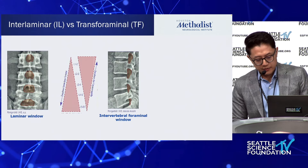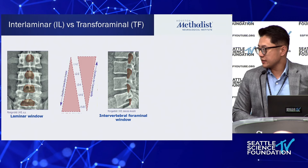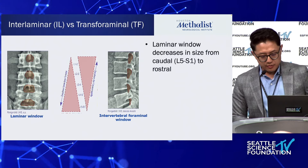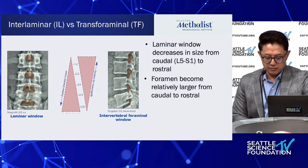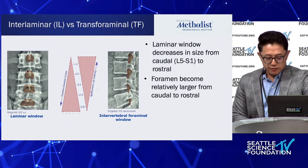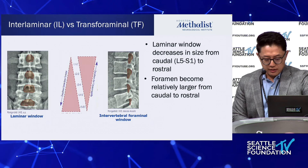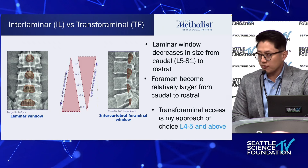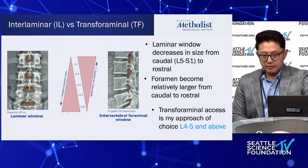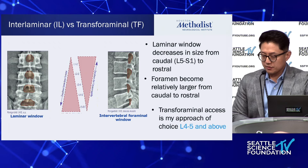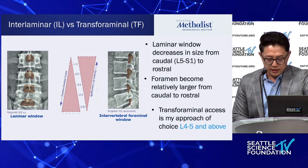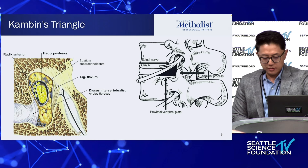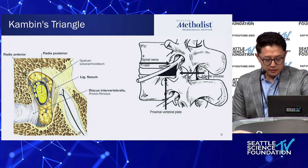This diagram shows that the laminar window decreases in size from caudal to rostral, and conversely the foramina become larger from caudal to rostral. For me, the transforaminal axis is my approach of choice for L4-5 and above. Generally at L5-S1, I use the transforaminal approach only for foraminal and extra-foraminal discs, and interlaminar at L5-S1 otherwise.